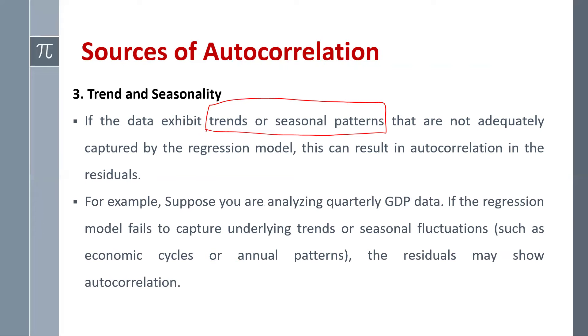So for example, we are analyzing quarterly GDP data. If the regression model fails to capture underlying trends or any seasonal fluctuations such as economic cycle or annual pattern, then residuals may show autocorrelation problem.